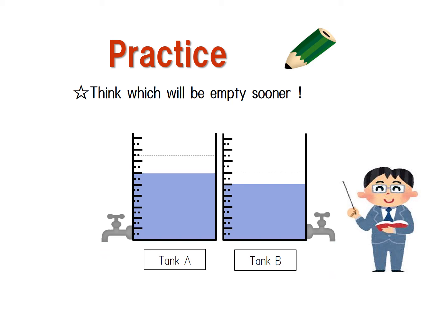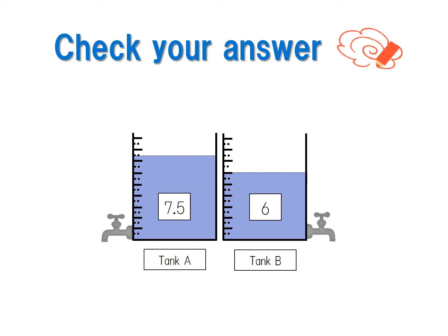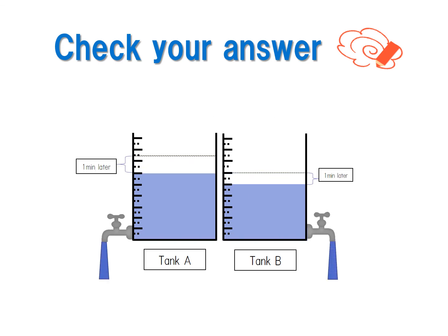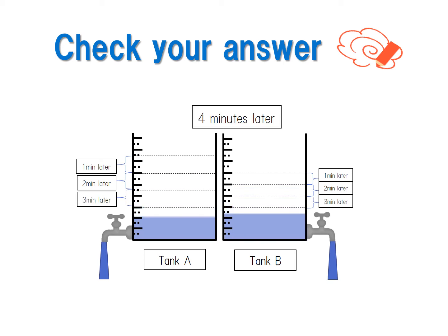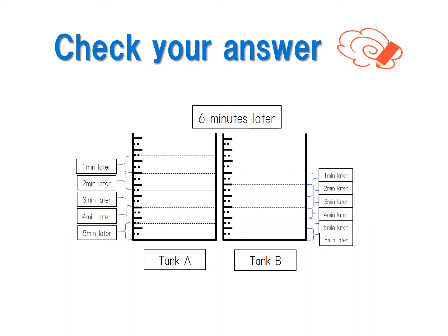Think which will be empty sooner. Put the pause button and choose one. If you have chosen, put the play button and check your answer. Then check your answer. Let's see how much water is flushed from the 2 tanks every minute. As you can see, tank A became empty sooner. Did you get the right answer?